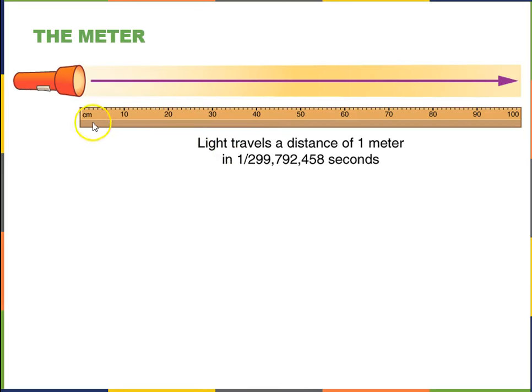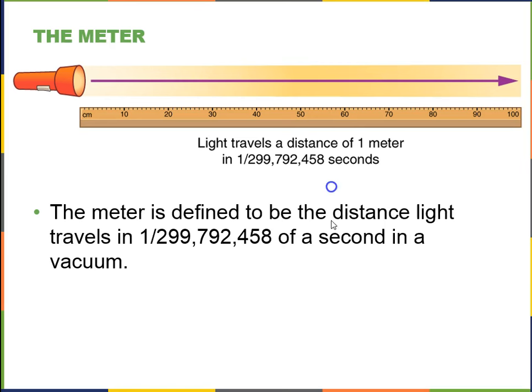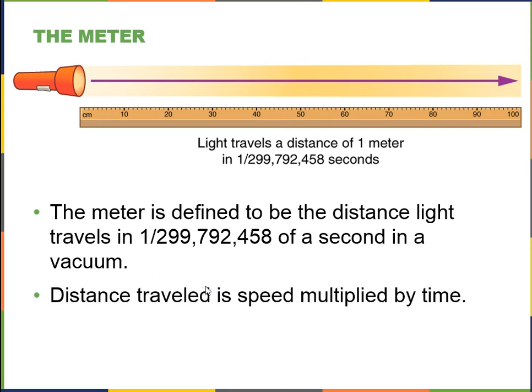Once you've got a second, you can define distance, the one meter, as being the distance that light travels in 1 over 299 millionths of a second. So this is, again, an integer. And it's defined as, once you've got the second, you can define the basic unit of length in this way. And the light has to be traveling in a vacuum, because if it's traveling in air, it travels a bit slower.